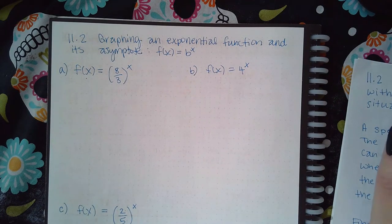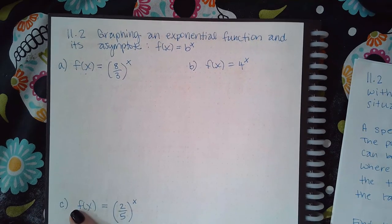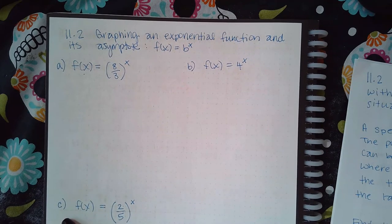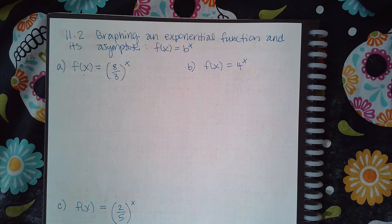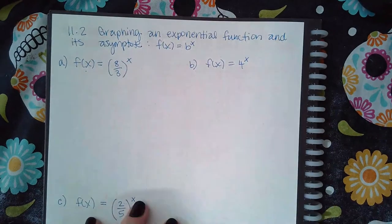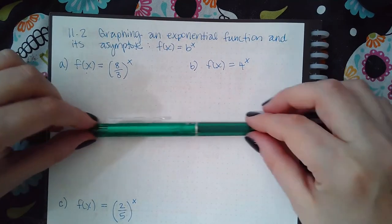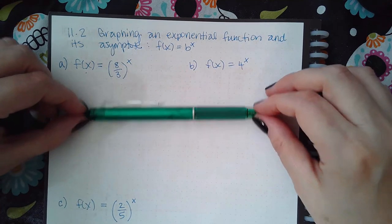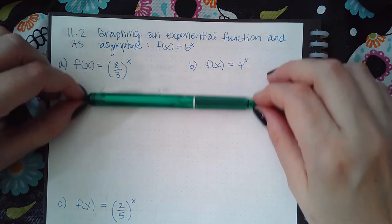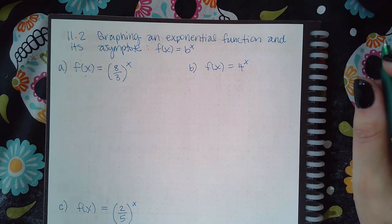This is 11.2, graphing an exponential function and its asymptotes. Normally the asymptote of every exponential function is going to be the x-axis, or the line y equals zero. The only time that's going to change is if the function has a vertical shift — whether it shifts up or down. If you take a vertical line and shift it left or right, it doesn't change where the horizontal asymptote is located. It's only when you shift it up or down that the horizontal y-value will change.